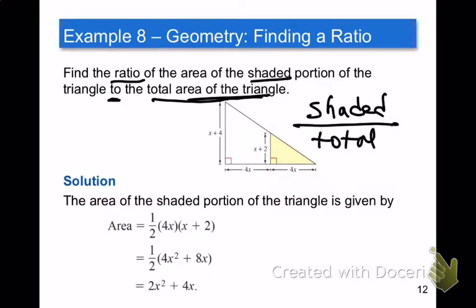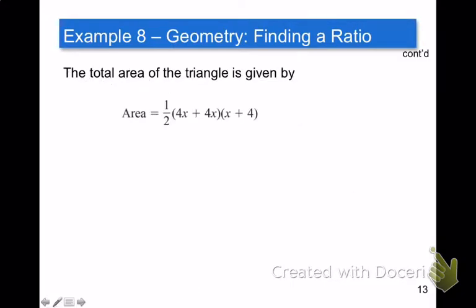Okay, so now we got to find the big triangle, which would be this base and this height. Here's the total area of the triangle. Again, remember area equals 1 half, base times height. So this is the base of the triangle, is the 4x plus the 4x, the two pieces. You're going to add them up. And the height was x plus 4. Simplify a little bit. You're going to get 8x in that parenthesis times x plus 4. Distribute that 8x, 8x squared plus 32x, and then take half of each of them, 4x squared plus 16x.